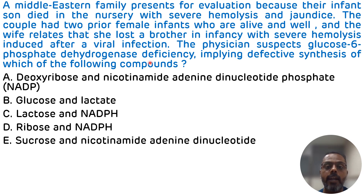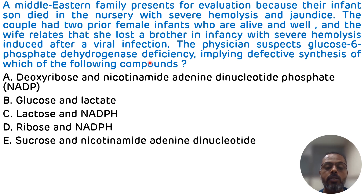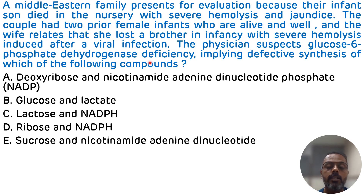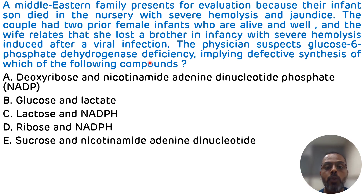This glucose-6-phosphate dehydrogenase enzyme is the rate-limiting enzyme for the HMP shunt pathway — that is, the Hexose Monophosphate shunt pathway. This HMP shunt pathway is an alternate route for the oxidation of glucose, apart from glycolysis. It has two key significances: it is required for the synthesis of NADPH and ribose sugars.